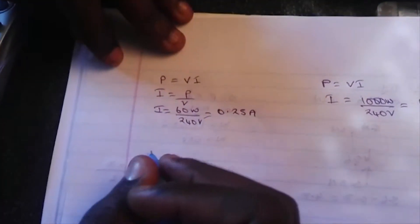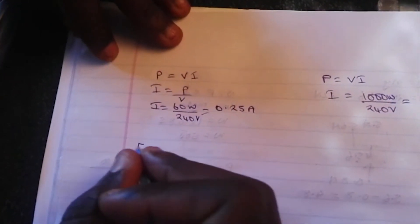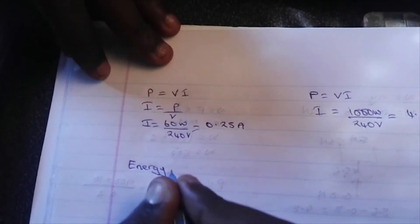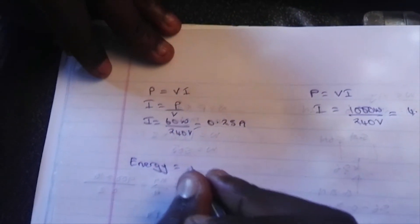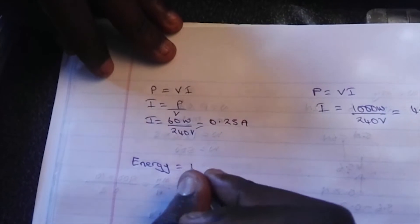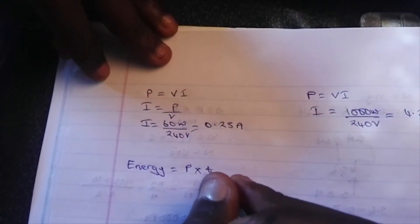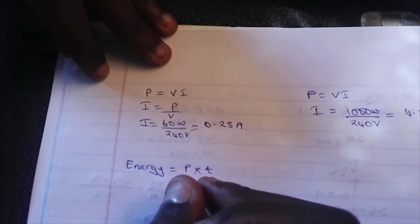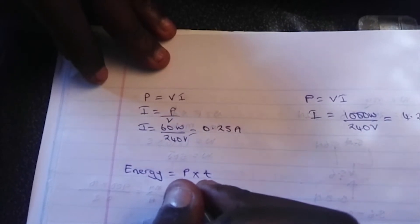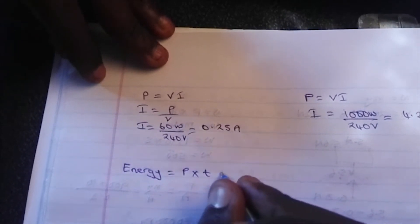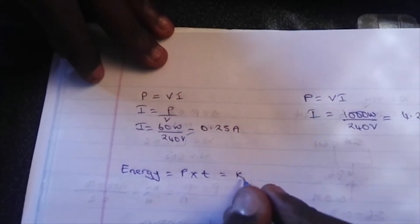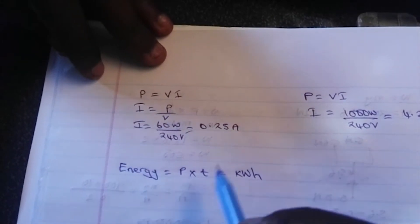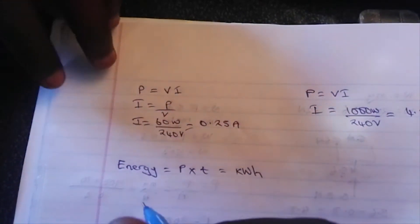Electric energy is equal to power times time. The power should be in kilowatts and the time in hours, because the unit is kilowatt hour. That's the unit of electric energy.